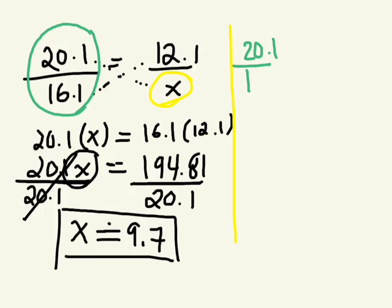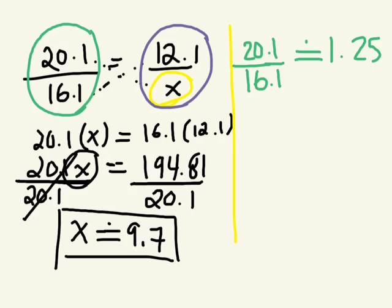So 20.1 over 16.1. What is this as a decimal? Let's figure this out. Let's do 20.1 divided by 16.1, approximately 1.248. So 1.25. Let's round it off. Well, according to our rule about similar triangles, all these corresponding side lengths should have the same ratio. So if 20.1 over 16.1 is equal to 1.25, then according to our answer, 12.1 over, we said X was 9.7, should also be equal to approximately 1.25.